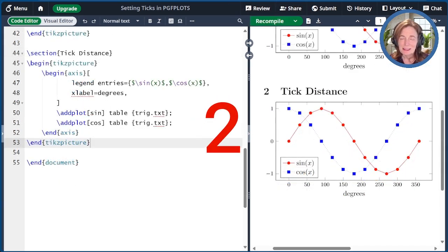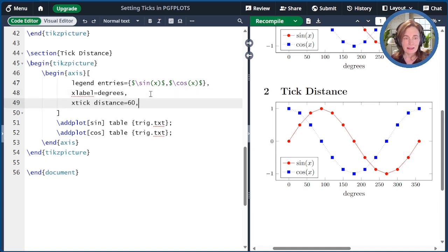The second way to set the ticks is something called tick distance. Here I've repeated the picture that we had before. What if I want the ticks to be every 60 degrees instead of every 50 degrees on the x-axis? The tick distance option allows me to give pgfplots that hint. So if I set x tick distance equals 60, and then we recompile, then we see that the ticks go 0, 60, 120, up through 360.